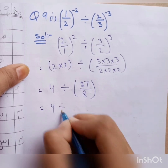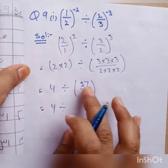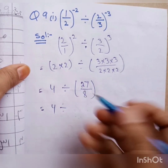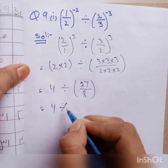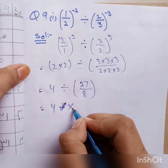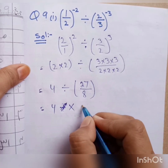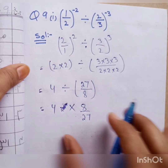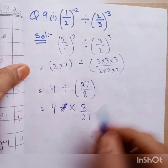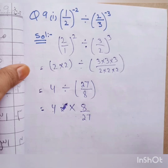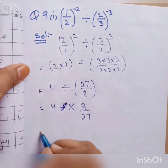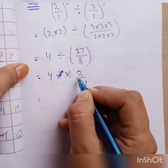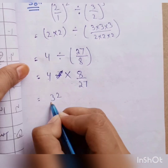We get 27 by 8. Now we cannot solve this by division directly, so we will convert the division sign into multiplication sign. When the sign changes, the numerator and denominator positions also change, so 8 becomes our numerator and 27 becomes our denominator. Cross cutting is not possible because 27 is odd and 8 is even.